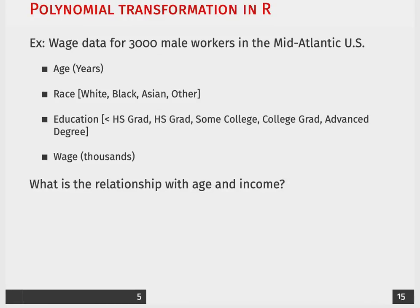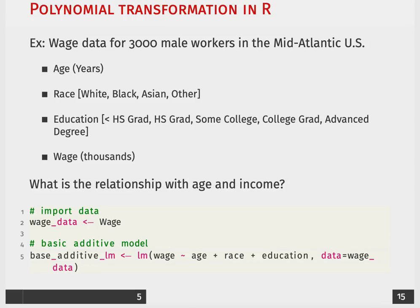Our main question is: what is the relationship with age and income? We're going to load our data from the ISLR package and fit an additive model where wage is the outcome and we have three predictors: age, race, and education.